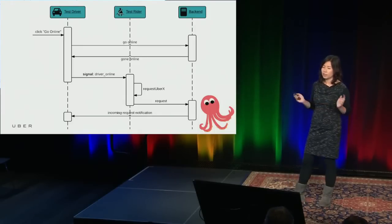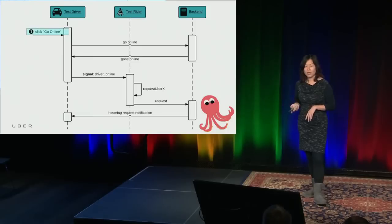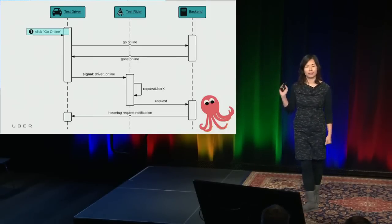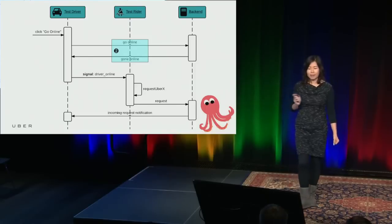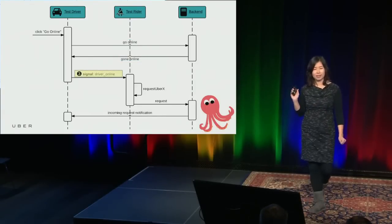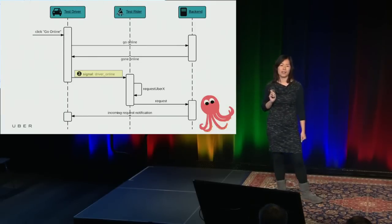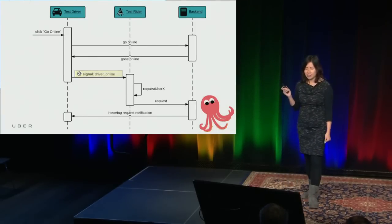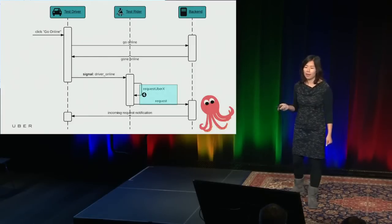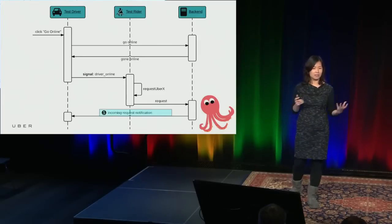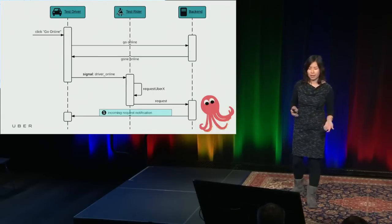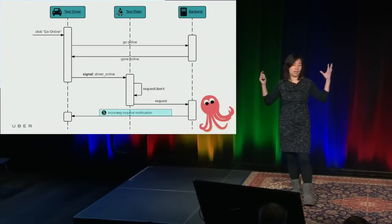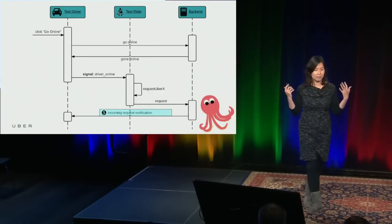Here's the correct sequence with Octopus. After they log in, the driver goes online, the request goes to the back end, and the back end acknowledges it. Now Octopus sends a signal from the driver test to the rider test: 'I'm online now, we can request.' The rider test clicks on Request UberX, the request goes to the back end, and the dispatch gets sent to the driver. Along the way, you can put in different checkpoints — the driver can tell the rider 'I accepted the ride,' and the rider test can check the status bar and verify the driver is en route.